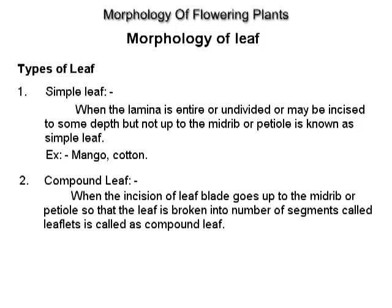Compound leaf. When the incision of the leaf blade goes up to the midrib or the petiole so that the leaf is broken into a number of segments called leaflets, it is called a compound leaf. Examples: rose, gulmohar, moringa.